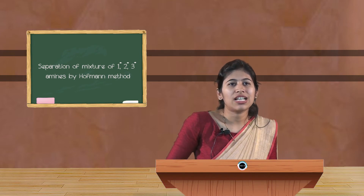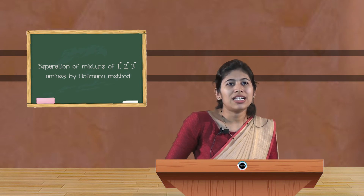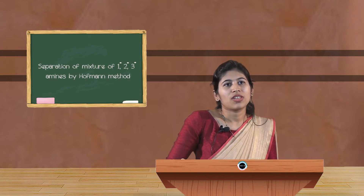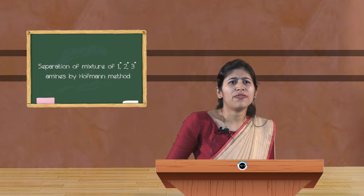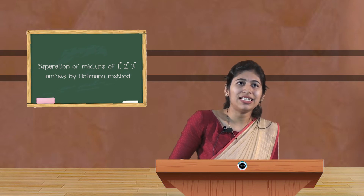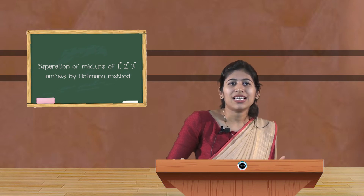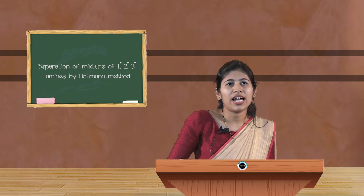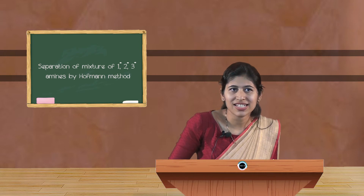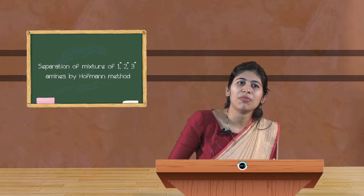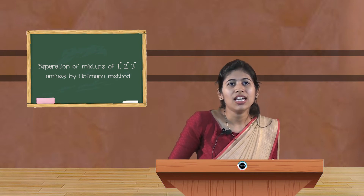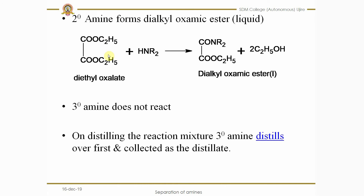Now let us see how the tertiary amine reacts. The formula of the tertiary amine is R₃N. Since there is no available hydrogen for the reaction, the tertiary amine does not react with the Hofmann reagent and remains unreacted.